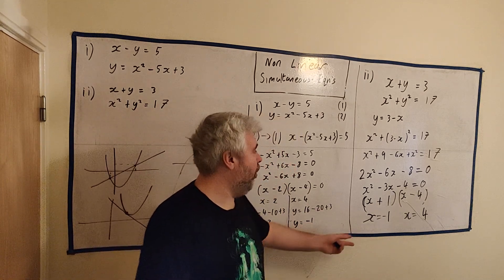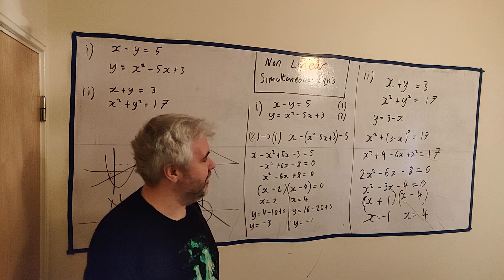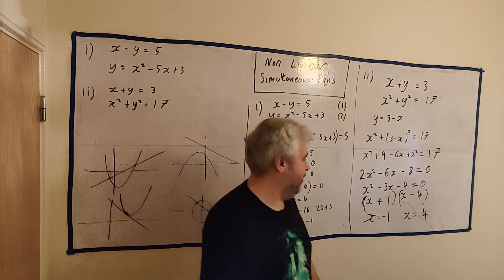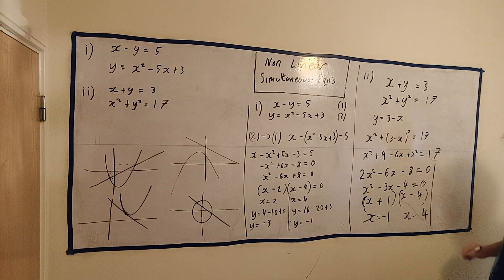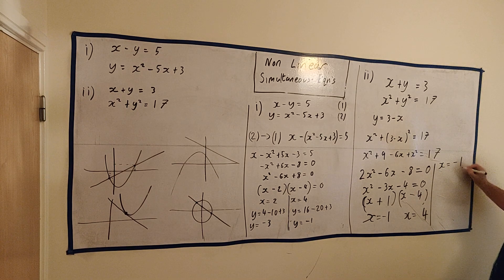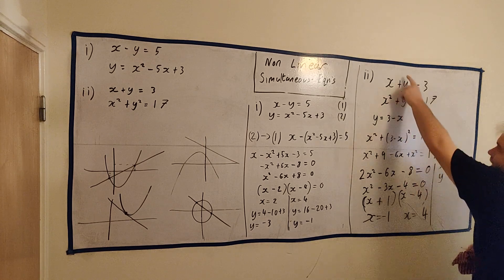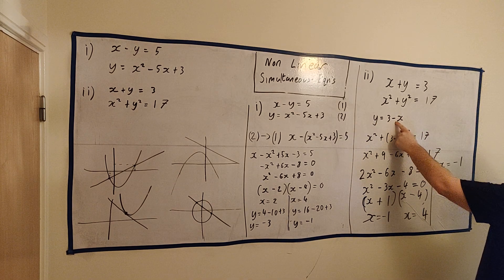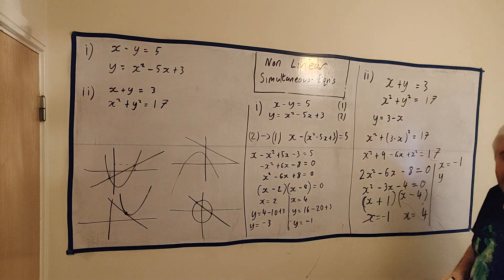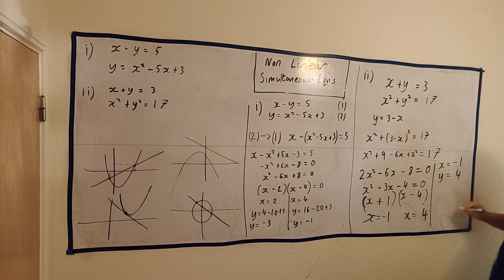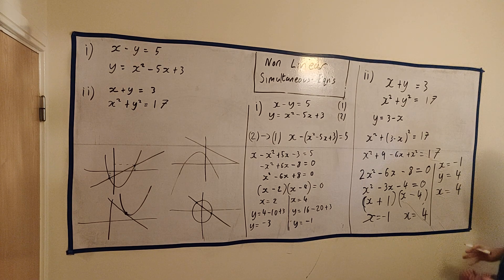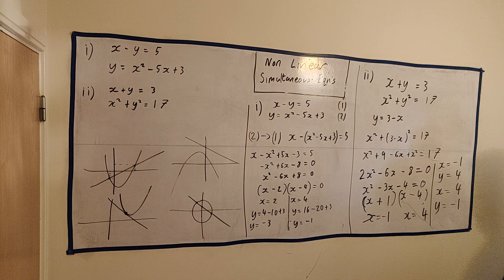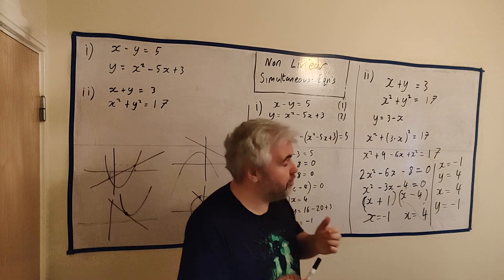That's half our answer. That is what x is equal. We still need what y is equal. We wanted to know what x and y was equal. We found out two different answers for x. So, let's say x equals minus 1. Well, y must equal. Let's go to the simplest equation we can. y equals 3 minus minus 1. It's plus 1. So, 3 plus 1 is 4. When x equals 4, what is y? 3 minus 4. y is equal minus 1. Right. So, that's those two questions.